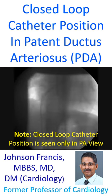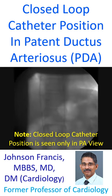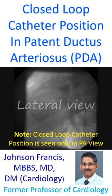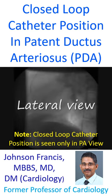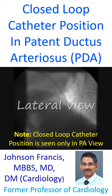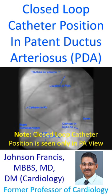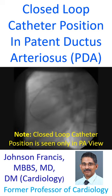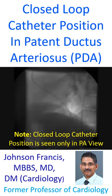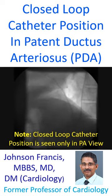From the MPA it enters the descending aorta through the PDA. In the AP window, the catheter enters the ascending aorta to the right of the MPA without curving further to the left as in PDA — that will produce an open loop appearance.